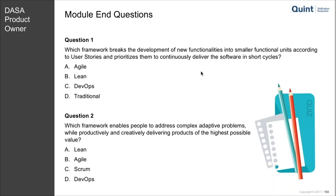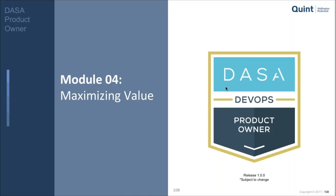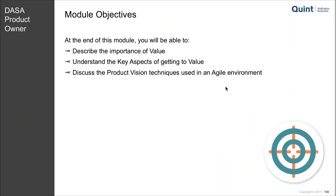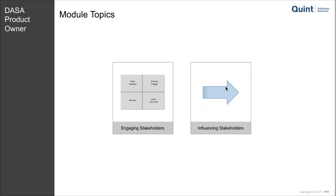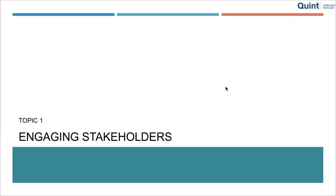At the end of this module there are also a couple of questions. Value is one of the most important things for a product owner, so let's go into module four — maximizing value. Very important to maximizing value is understanding what value is for your customers. We're talking about engaging stakeholders and how to influence them, covering stakeholder management. This specific part of the training is not really included in basic product owner training, so it may be a part with added value for some of the product owners in your audience.